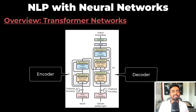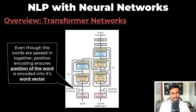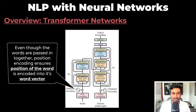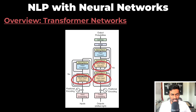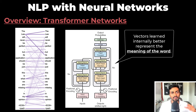The transformer is an encoder-decoder architecture. The architecture has a position encoding, so even though the words are passed in together, the position encoding ensures that the position of the word is encoded into its word vector. The architecture also makes use of attention mechanisms, which are used to tell the network how important a word is with respect to the other words in the sequence. And so the vectors of words learned internally better represent the meaning of the word.